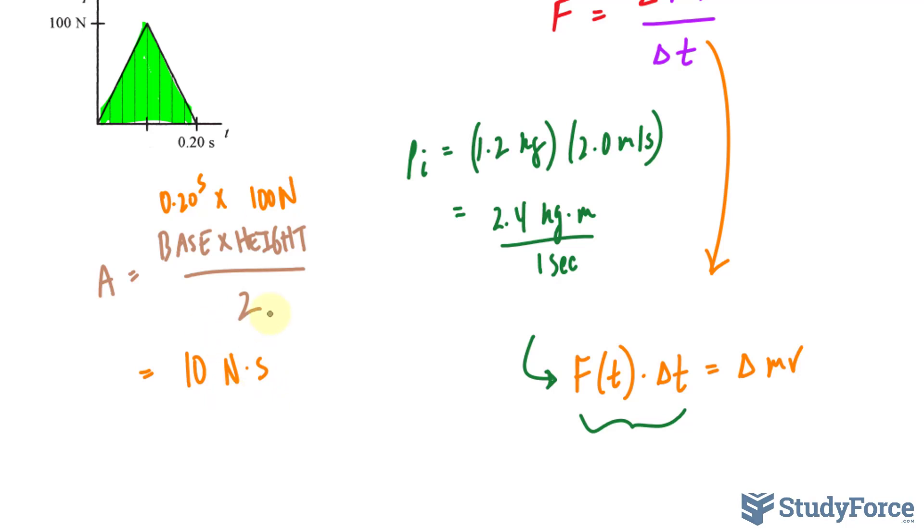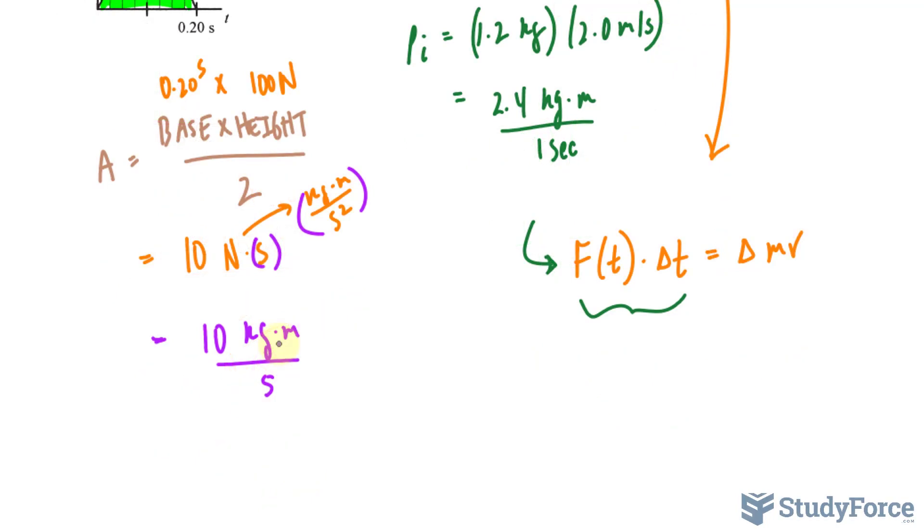Remember, newtons is kilograms times meters per second squared. Therefore, if you multiply this unit with seconds, you end up with 10 kilograms times meters per second. Those are the units for momentum. So that's the change in momentum.